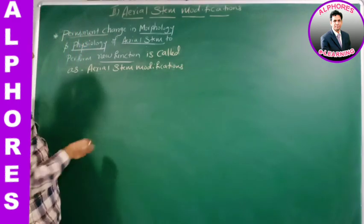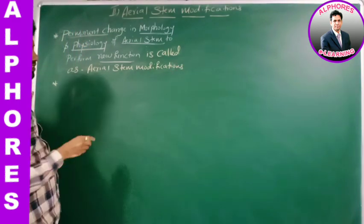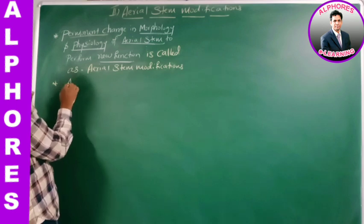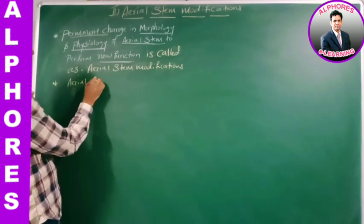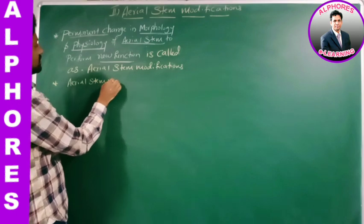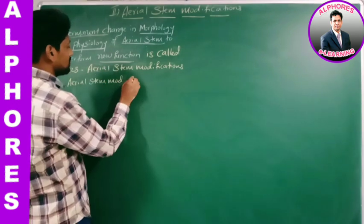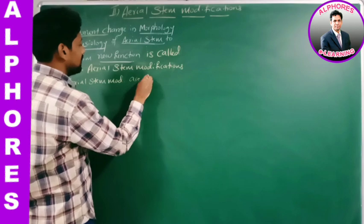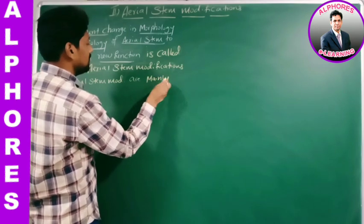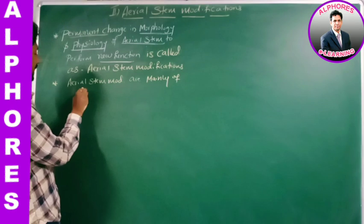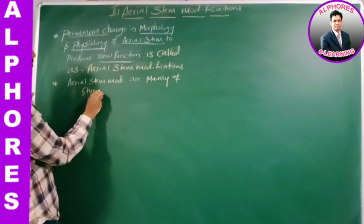Aerial stem modifications are mainly of five types. What are they? Number one: stem tendrils. Number two: thorns. Number three: hooks. Number four: phylloclade. Number five: bulbil. Be careful — bulb is an underground stem modification, whereas bulbil is an aerial stem modification.